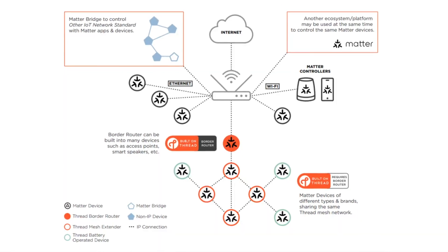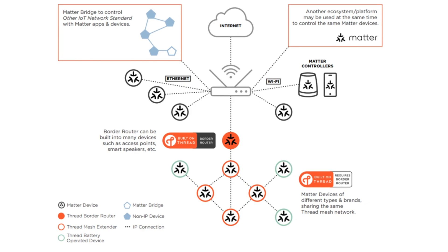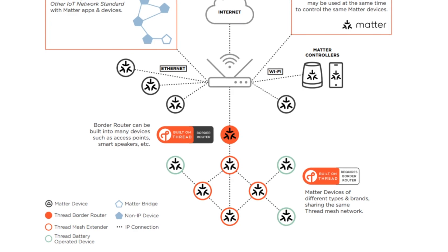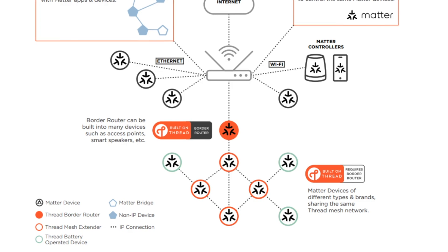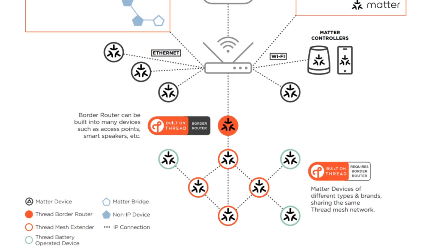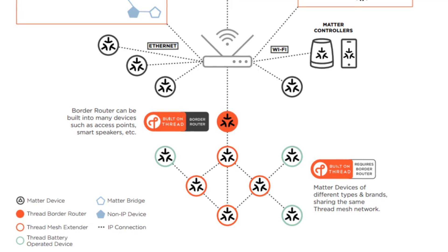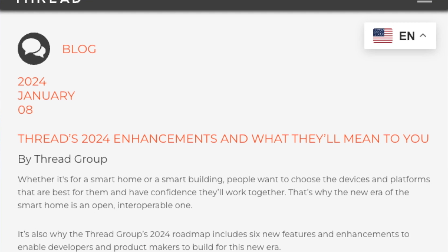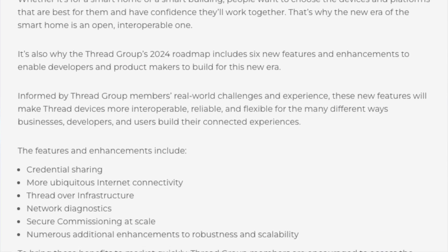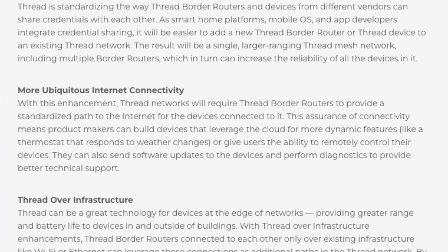Thread 1.4 is here! Thread is the wireless mesh protocol that underpins a huge part of the Matter smart home. It's not the only network that Matter smart home devices can use — regular old Wi-Fi, Zigbee via a Matter bridge, or even Bluetooth bridging are all possible. But Thread and Matter are inextricably linked, and like any emerging technology, Thread has had its fair share of early niggling issues. In this video, we'll be exploring Thread 1.4 and what it means for the Matter smart home.